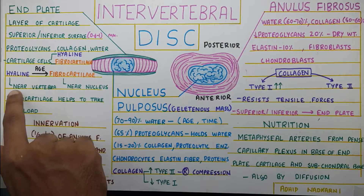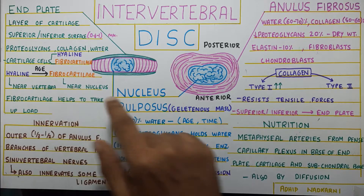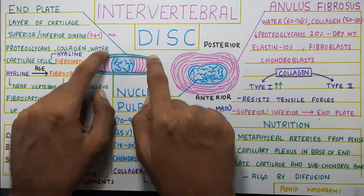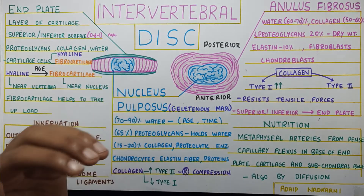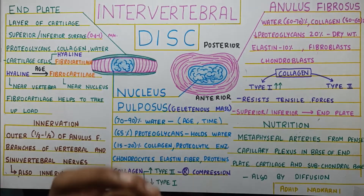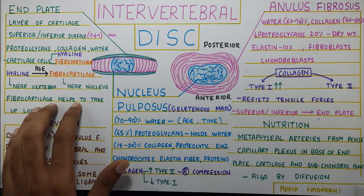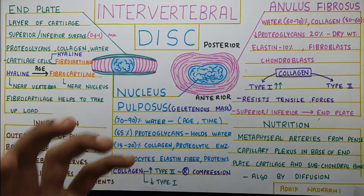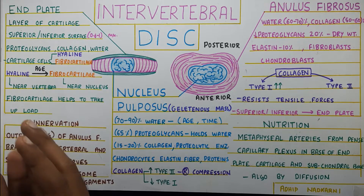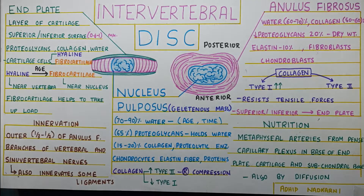Hyaline cartilage is present more near the vertebrae, whereas fibrocartilage is present more near the nucleus. The fibrocartilage helps in taking up the load, which is why with age hyaline cartilage gets converted into fibrocartilage. With that we finish the end plate section.